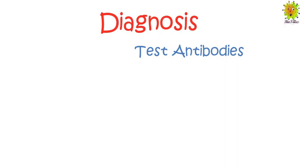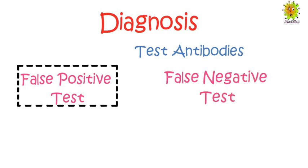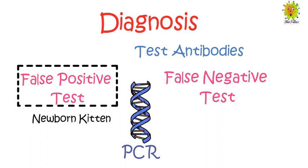This presence of antibodies can also result in either a false positive or false negative test. In a false positive case, a newborn kitten from an infected mother will have antibodies in the blood, but that doesn't mean the virus is present — the kitten receives antibodies from the mother through milk. Such kittens must be retested via PCR to detect viral DNA. Similarly, FIV-vaccinated cats will also show a positive antibody test, requiring PCR to confirm actual virus presence.